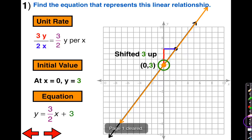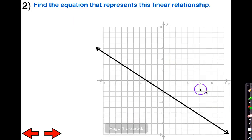Now let's take a look at our next example. We're going to do the same thing. We're going to find the equation that represents this linear relationship. First we're going to find the unit rate. In order to find the unit rate, we need to find two ordered pairs, nice ordered pairs. I found one here and another one here.